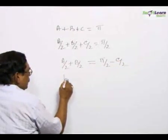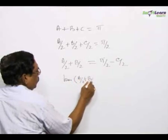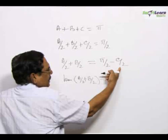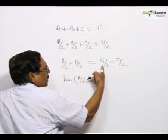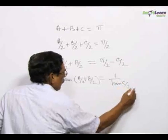Then take tangents on both sides. Tan A by 2 plus B by 2 is equal to tan 90 minus theta, that is cot theta, which is 1 by tan theta, or in other words, 1 by tan C by 2.